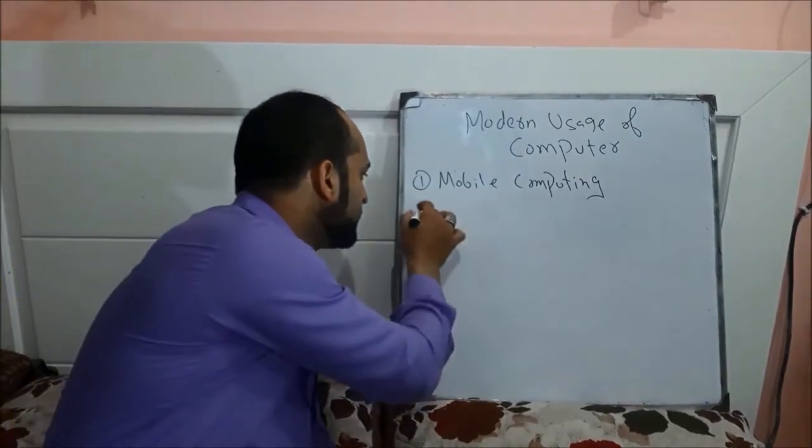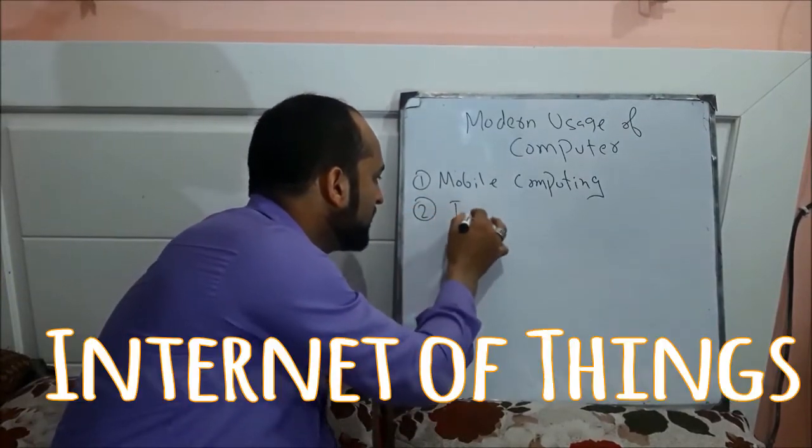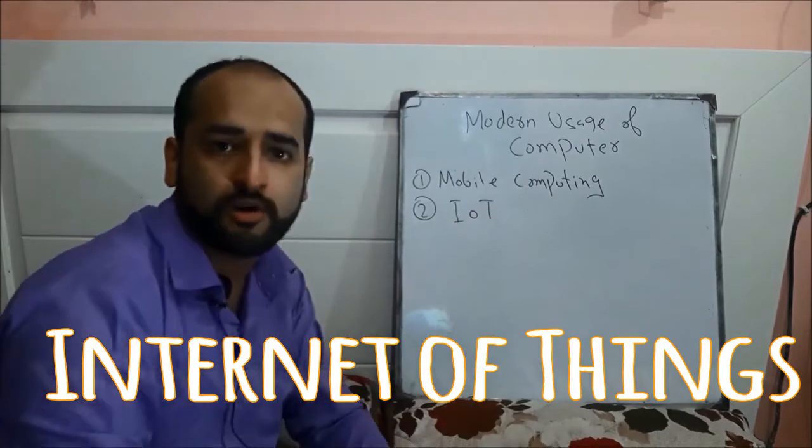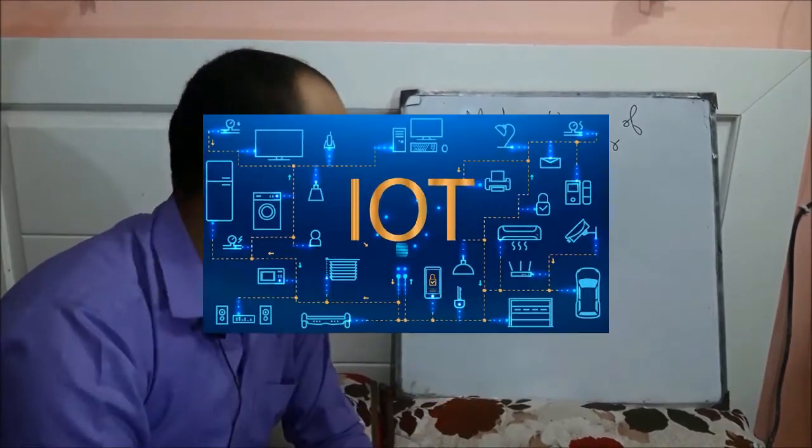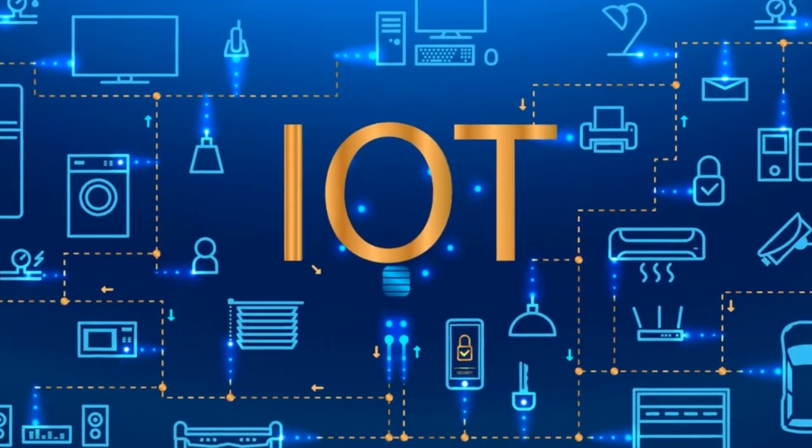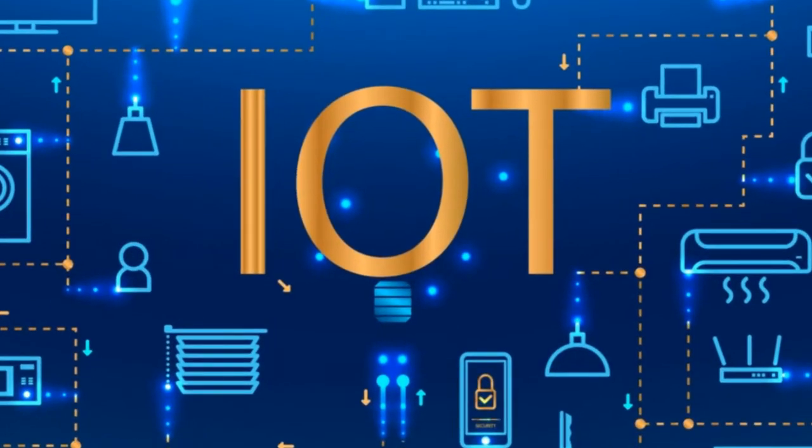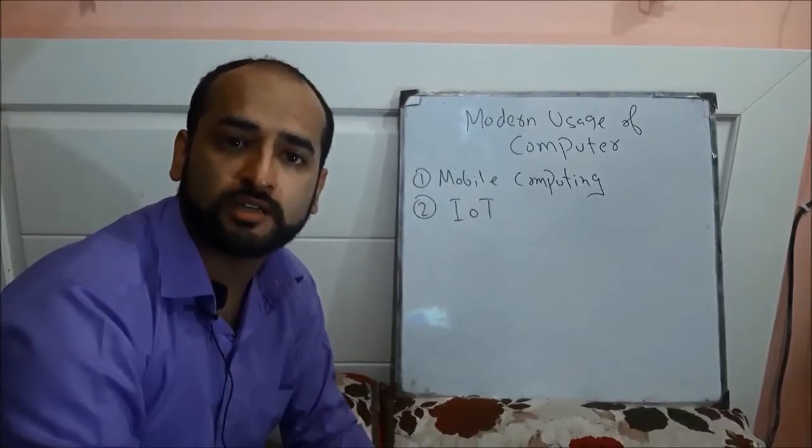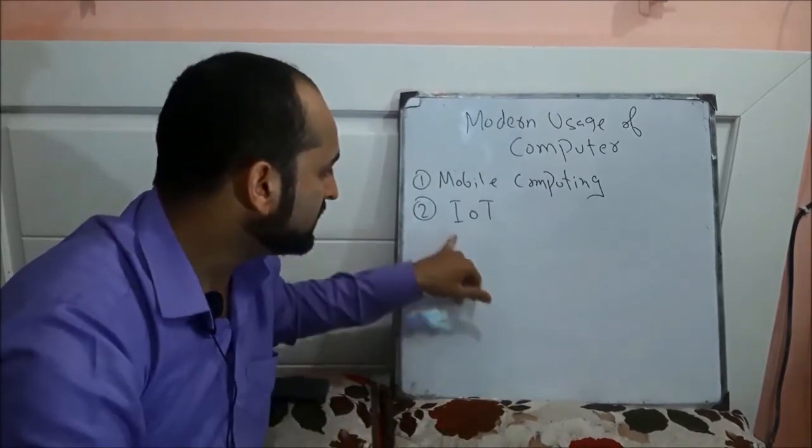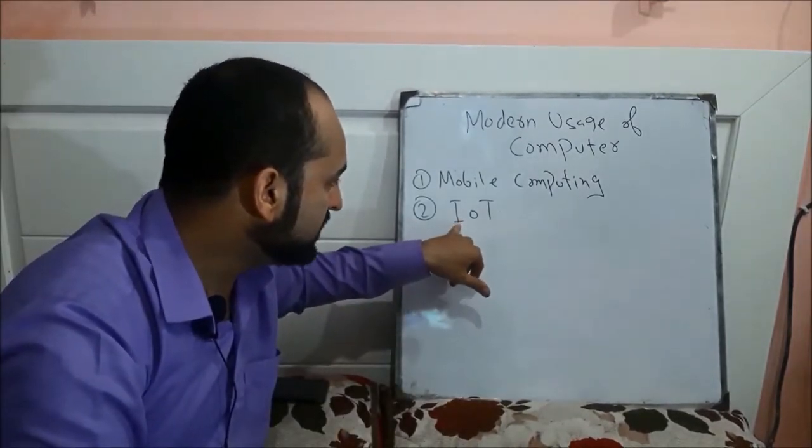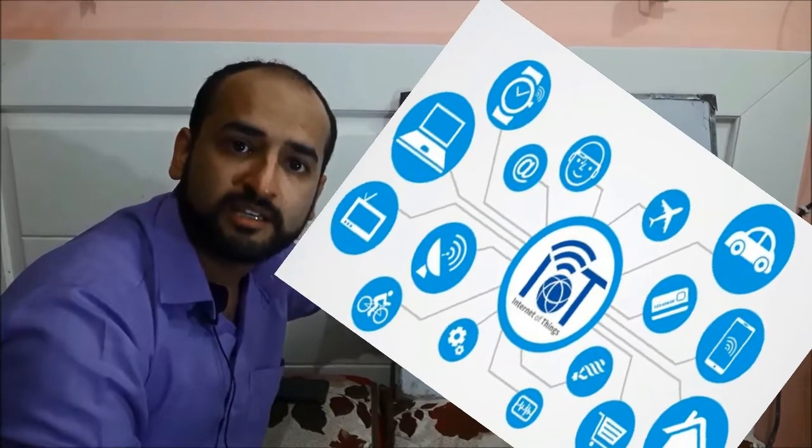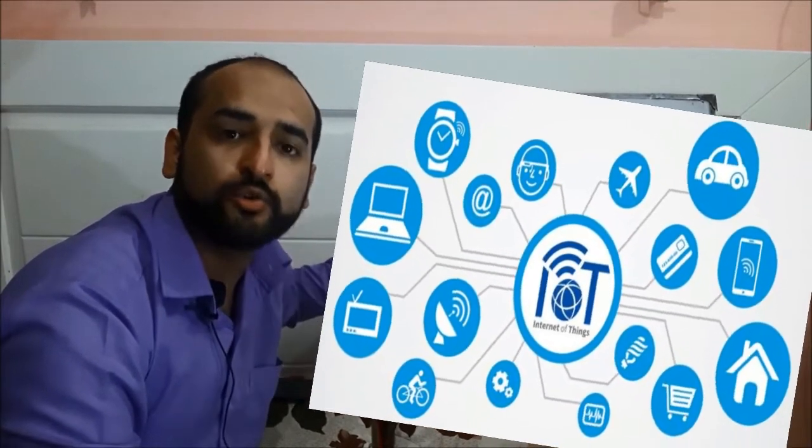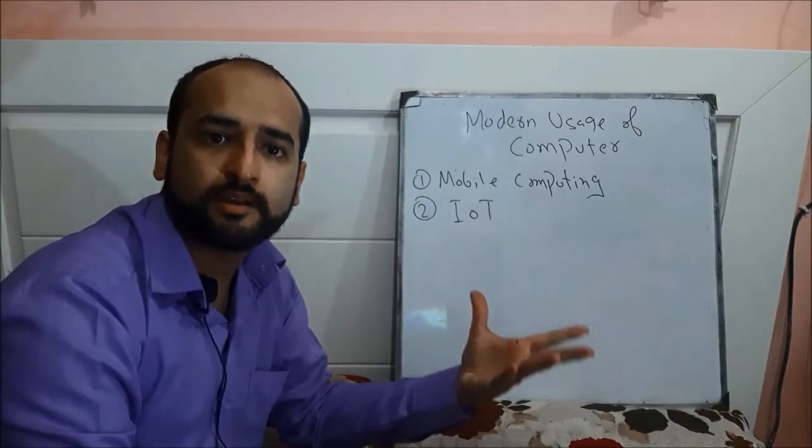Number two is IoT, which stands for Internet of Things. IoT is a very special type of research topic which students are studying today. The name itself says Internet of Things - we are controlling things through the Internet. What are things in our house?